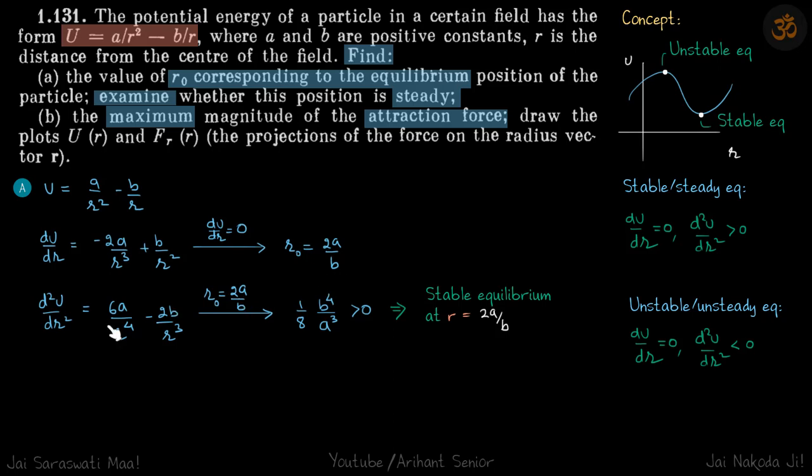Now stable or not, we will see from double differentiating it. We differentiate again, put the value of 2A by B, and we see it's greater than zero, which means it's a stable equilibrium at R equals 2A by B.